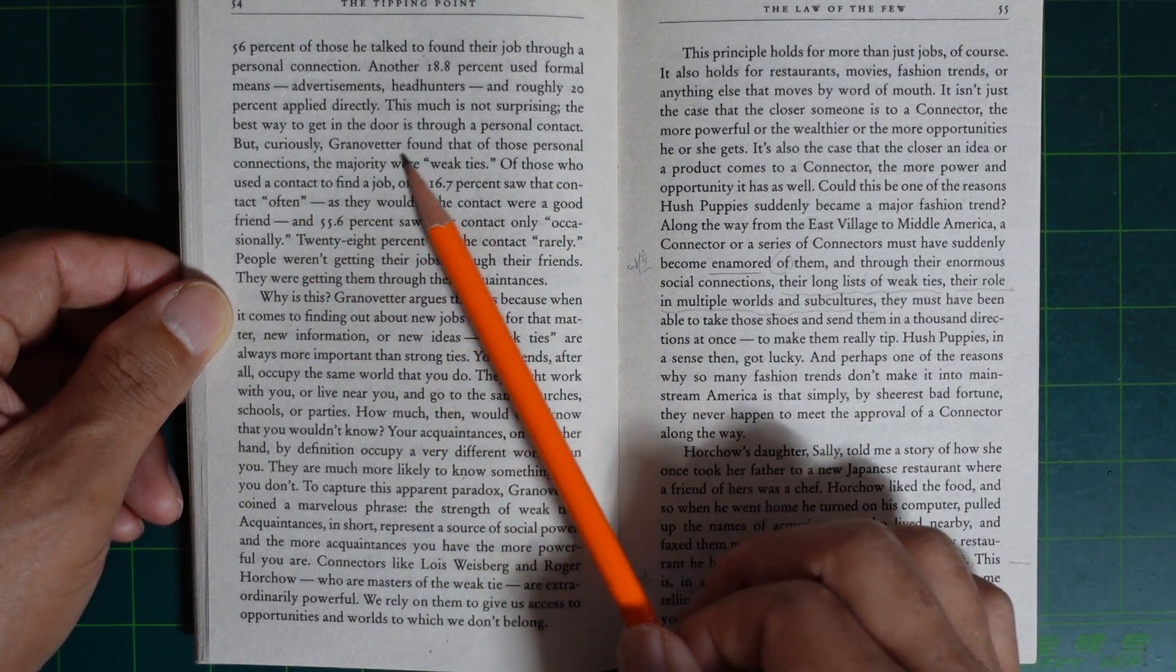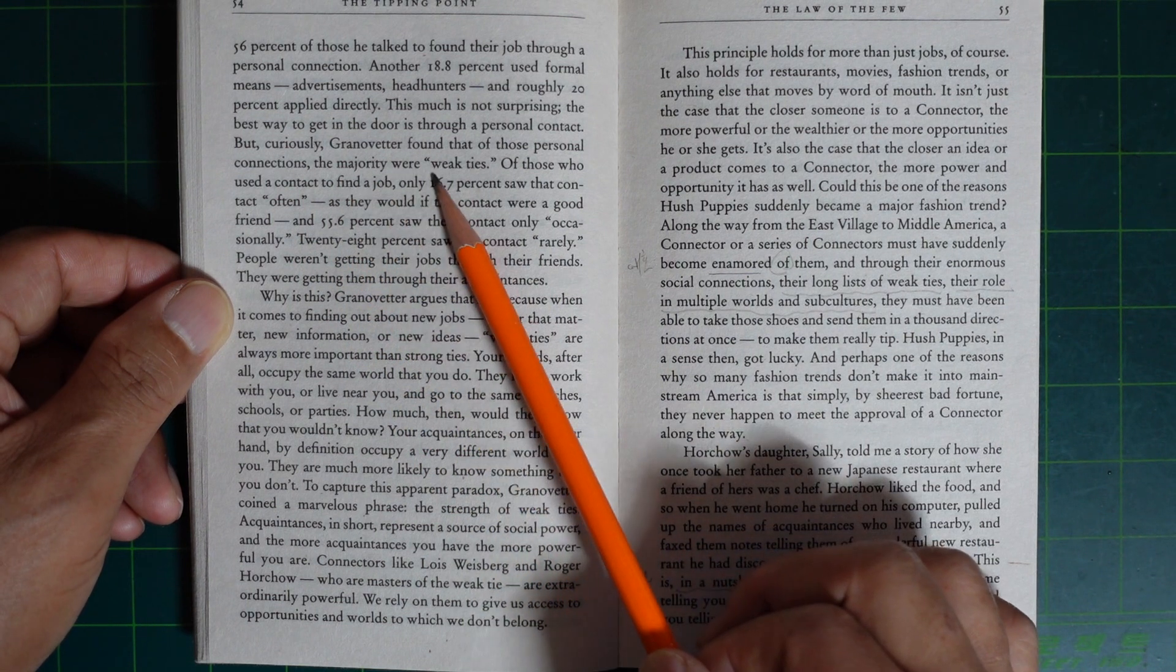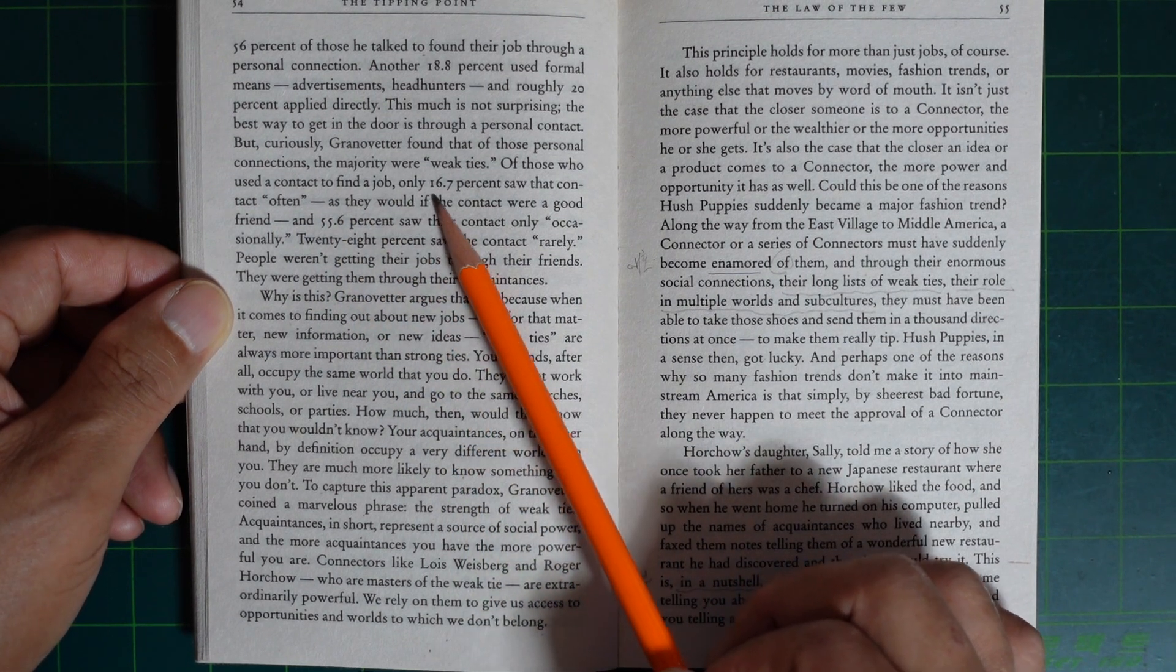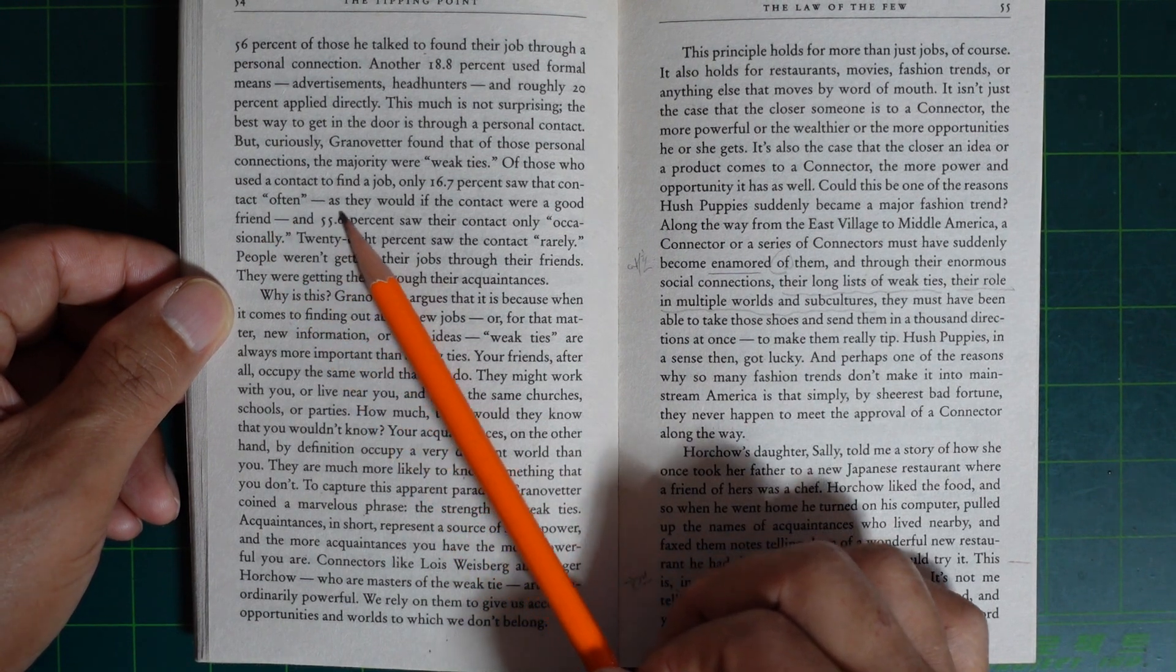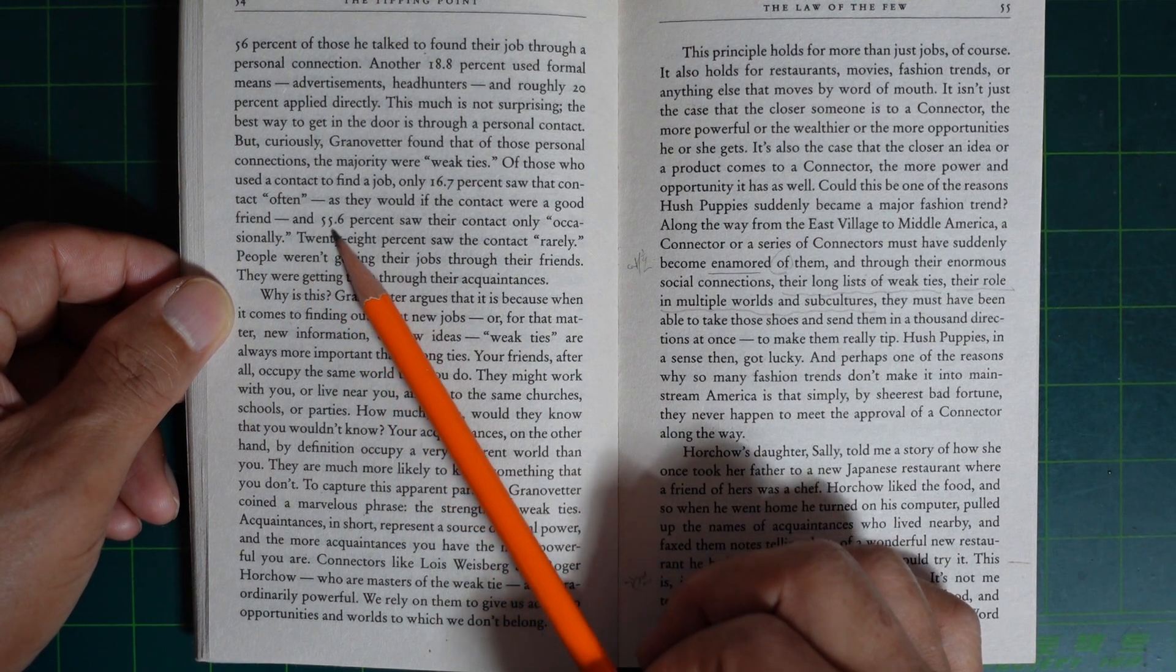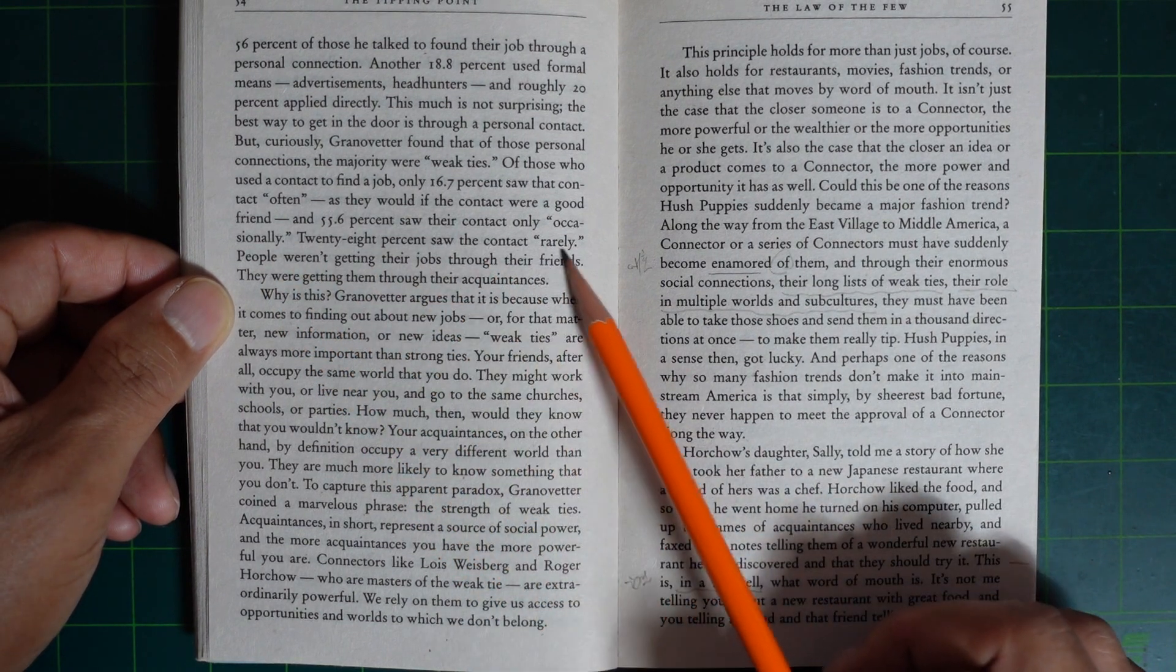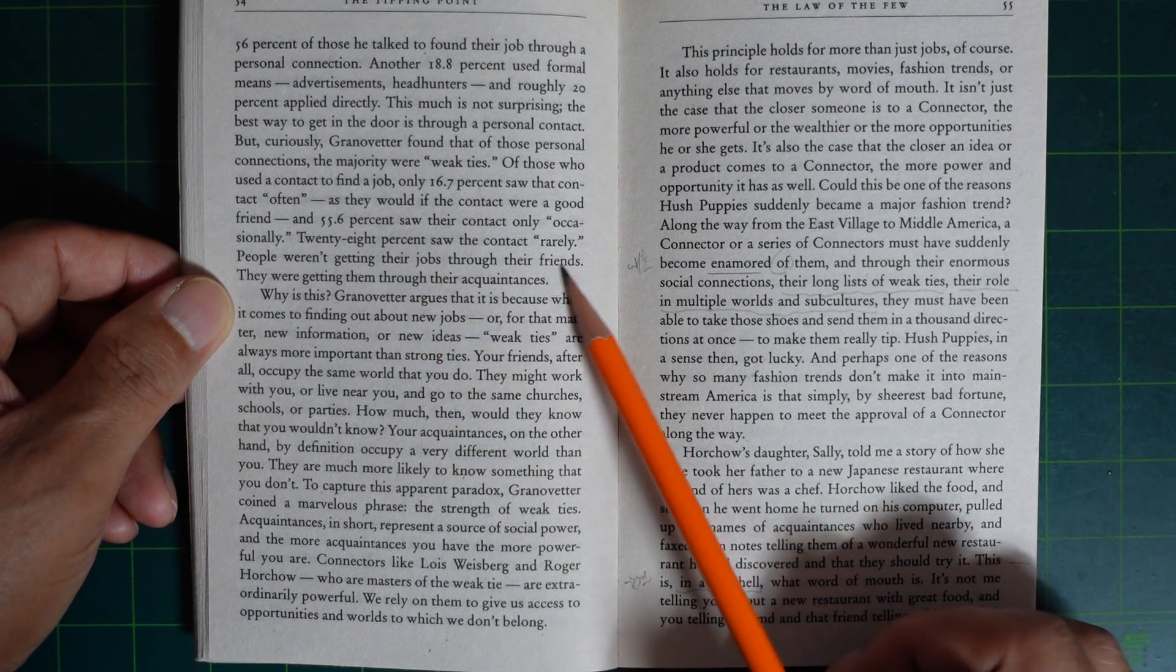But crucially, Granovetter found that of those personal connections, the majority were weak ties. Of those who used a contact for their final job, only 16.7% saw the contact often, as they would if the contact were good friends, and 55.6% saw their contact only occasionally, and 28% saw the contact rarely.